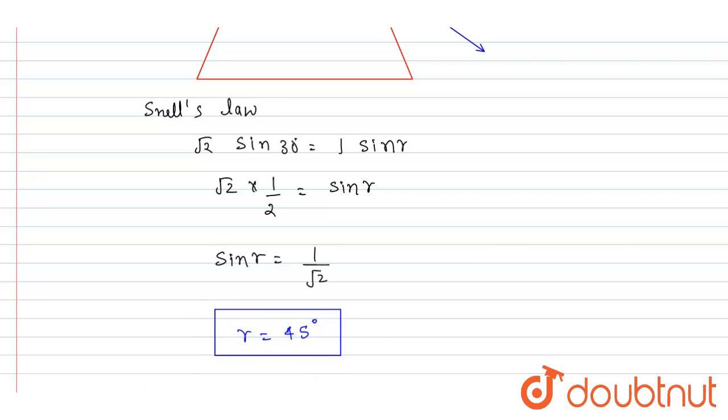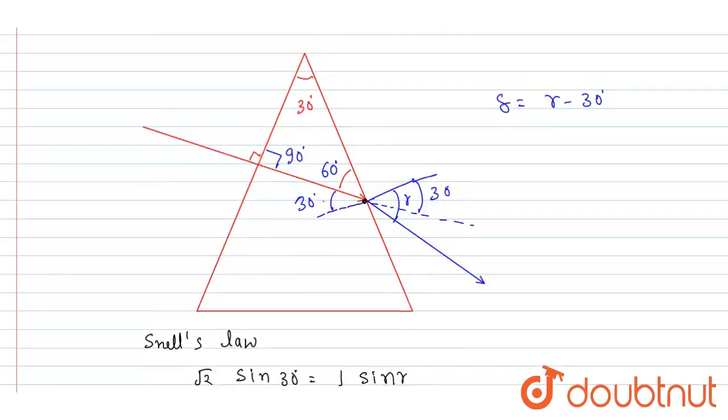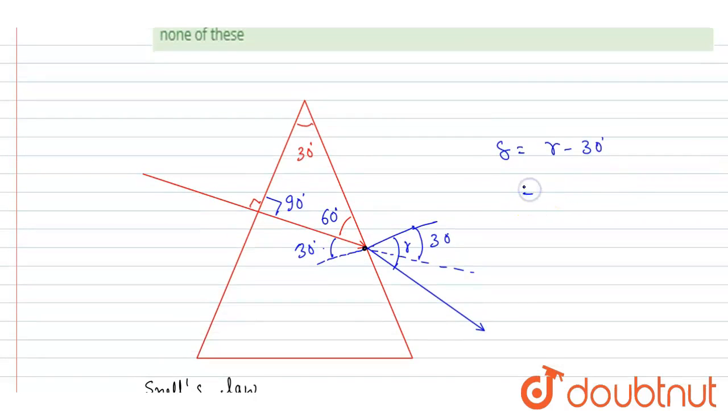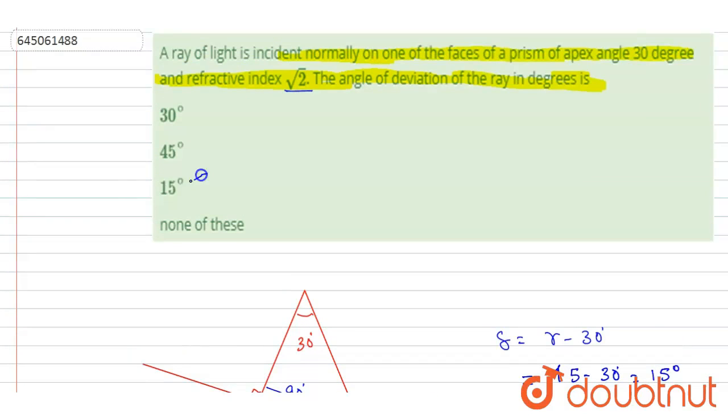Now we can just put the value of r here. You can see very clearly, if you see this angle is 45 and the angle is 30, so this much is the angle through which it is deviated. That is 45 minus 30, that is 15 degrees. And now you can check for the option here, C is the correct one. Thank you.